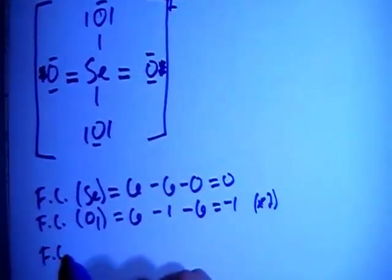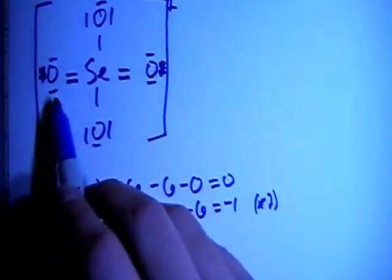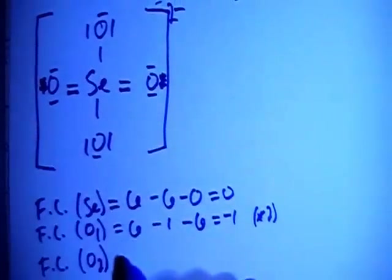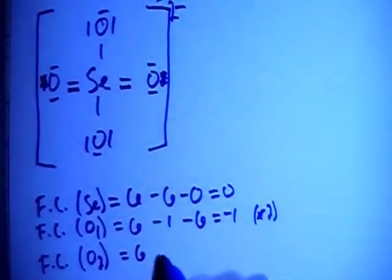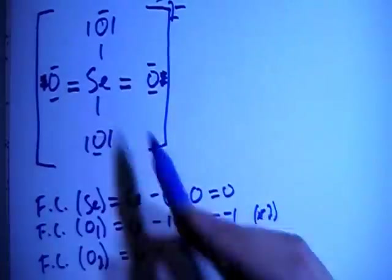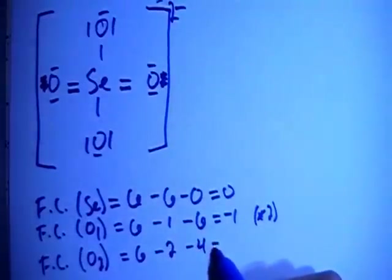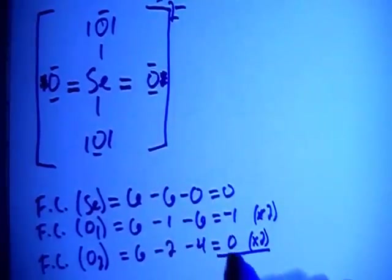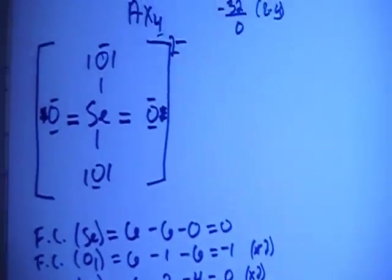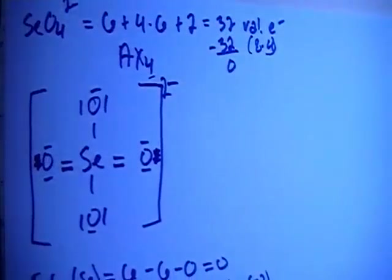And now we have the formal charge of the oxygens with double bonds, O sub 2. So the formal charges on those, it's going to be 6 for the valence brought in, minus 2 bonds for each oxygen, minus 4 non-bonding electrons, so a formal charge of 0. Multiply that times 2 because there's 2 of them. If you sum that up, it's going to give you a minus 2 overall formal charge, which is what we want because that is the charge of this ion.